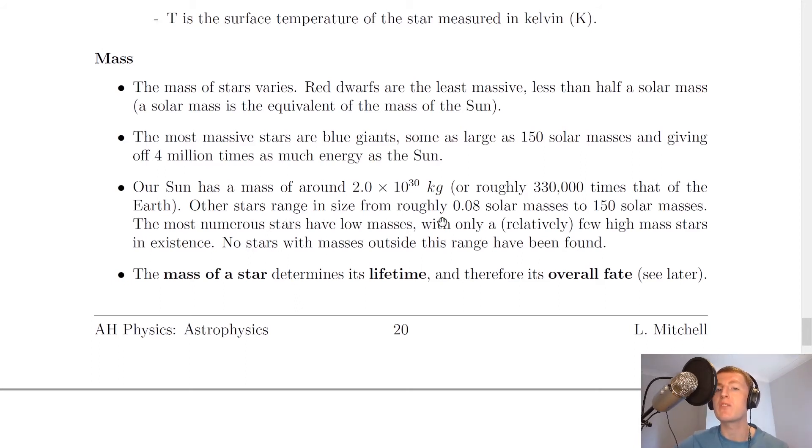Other stars range in size from roughly 0.08 solar masses to about 150 solar masses. The most numerous stars have low masses, with only relatively few high mass stars in existence. So that just means we have more lower mass stars than higher mass stars. No stars with masses outside this range have been found. The mass of a star determines its lifetime and therefore its overall fate. We'll see this later when we talk about the evolution of stars.